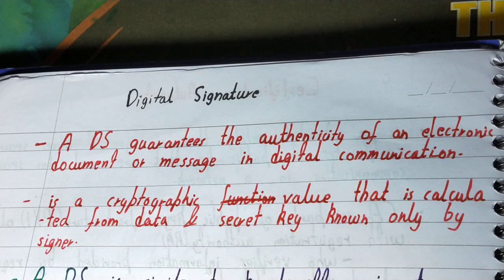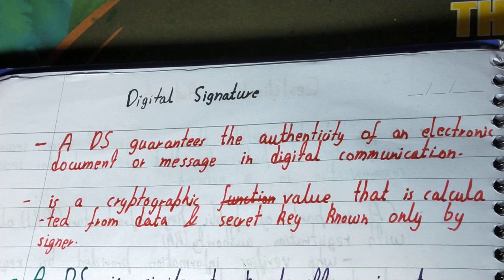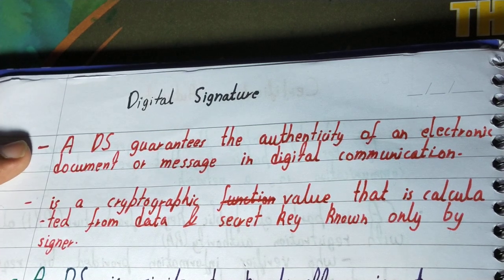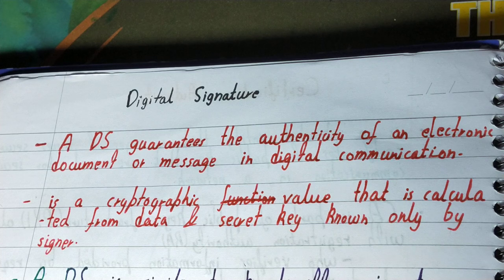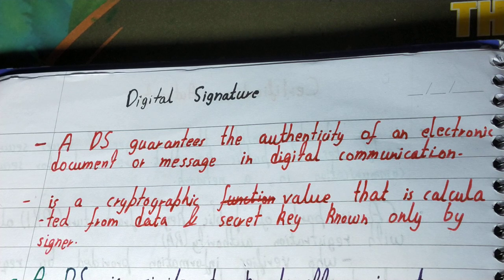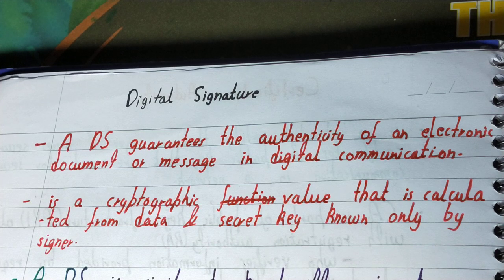In this video, I'll be explaining what a digital signature is. A digital signature guarantees the authenticity of an electronic document or message in digital communication. Most of the time, we have to share sensitive data from a sender to a receiver, and that sensitive data should be authenticated — the sender should be verified as the original sender.